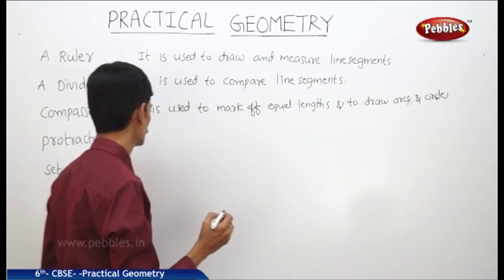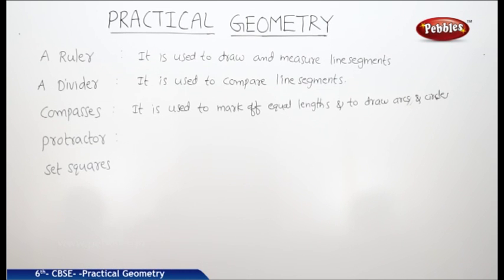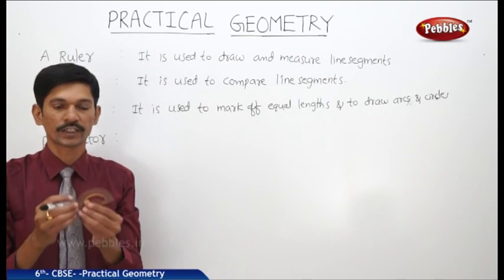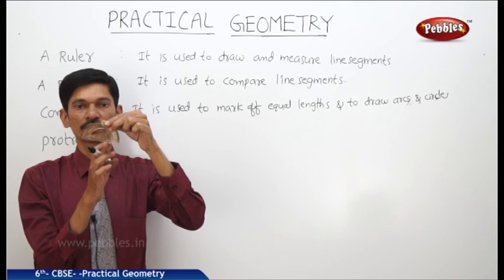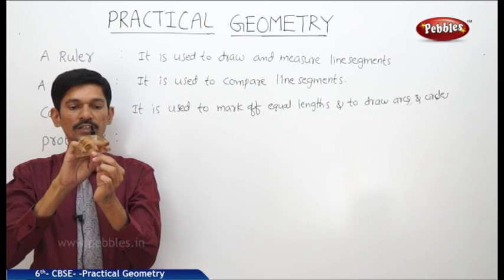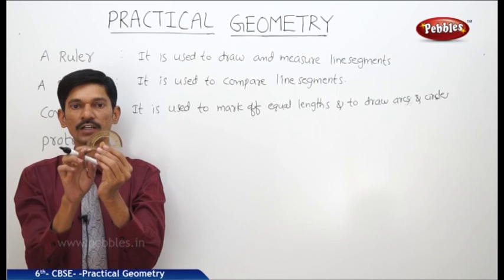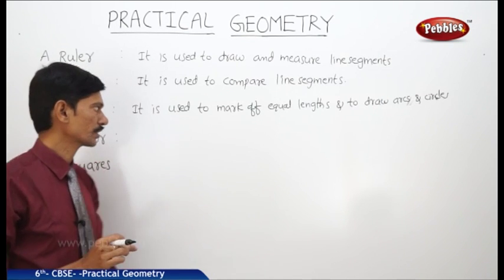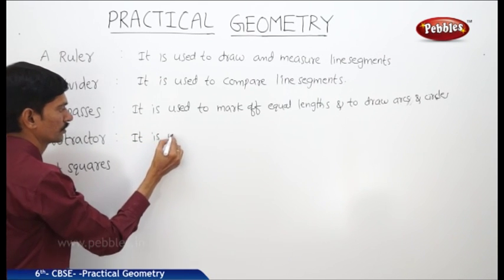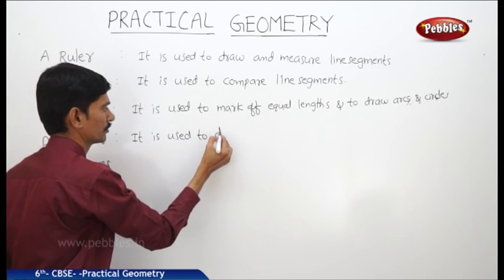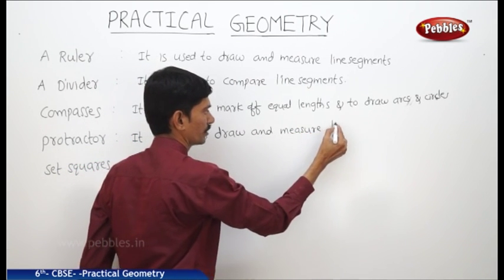The next one is protractor. It has one semicircular shape and the other shape being the straight edge. On the semicircular edge, 0 to 180 degrees in equal parts are mentioned, from left to right and also from right to left. This protractor is used to draw and measure angles.